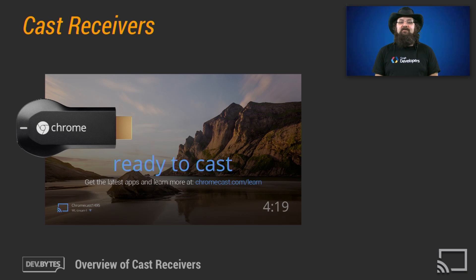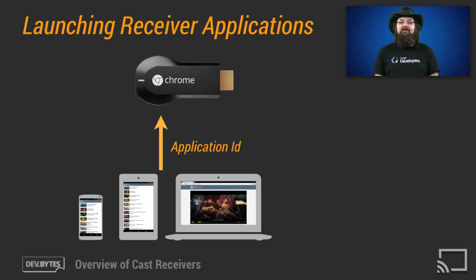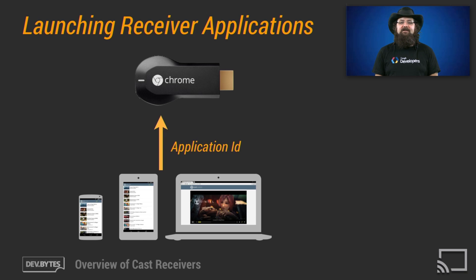All interactions with a running CAST receiver application happen through messages sent by a CAST sender app. To illustrate this interaction model, let's take a look at how a CAST receiver application is launched. CAST receiver applications are launched when a CAST sender application running on a sender device — such as a phone, tablet, or computer — tells a receiver device that it wants to launch an application. What that application is depends on the application ID that the sender provides. The receiver device will look up the application ID using a Google service and load the corresponding receiver application associated with it.